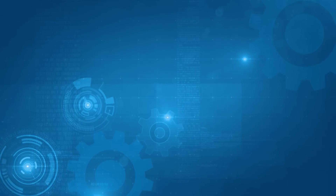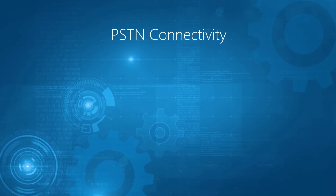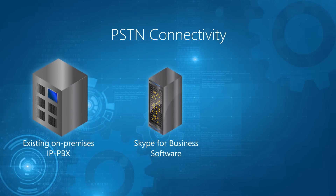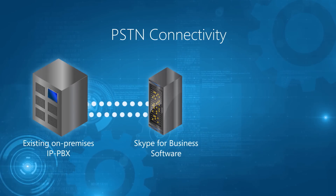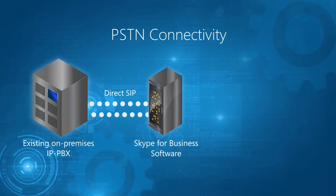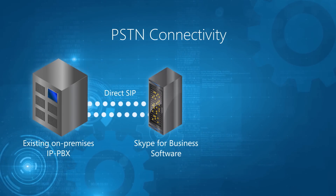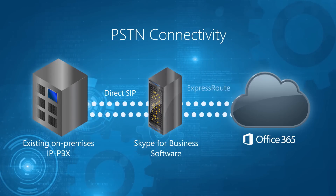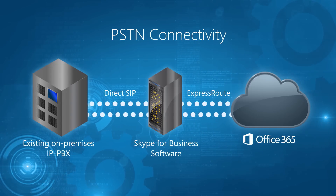What if I'm in a region where you're not offering that calling plan yet? This is a scenario called on-premises PSTN connectivity. We use Skype for Business Server software to connect between a customer's existing carrier — their contract and their circuit — and Office 365. We use Skype for Business Server software for this connection with the customer's existing on-premises telephony infrastructure — that could be their PBX, their gateway, or their session border controller. We do that connection using Direct SIP, which is something we've been doing for years.